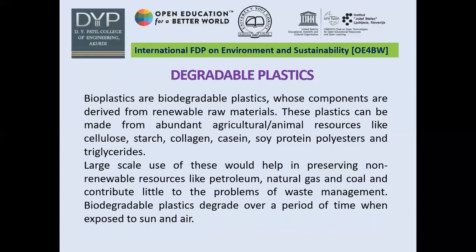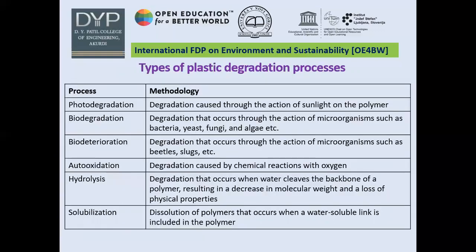Biodegradable plastics degrade over a period of time when exposed to sun and air. The types of plastic degradation processes include: photodegradation, which uses sunlight for degradation; biodegradation, which uses microorganisms such as bacteria, yeast, fungi, and algae. Another form of biodegradation involves the action of microorganisms such as beetles, sludge, or microbial sludge.